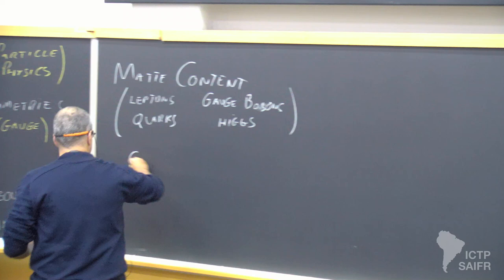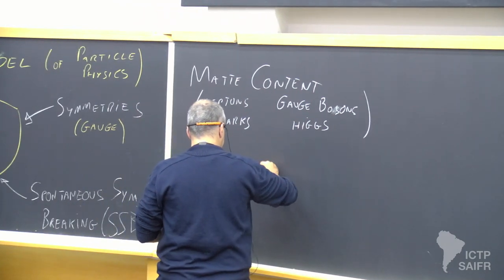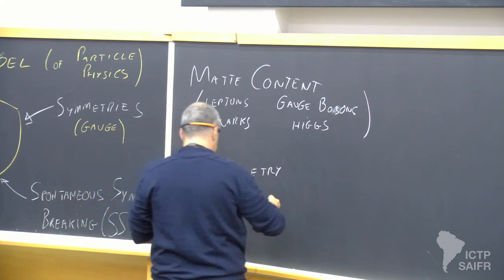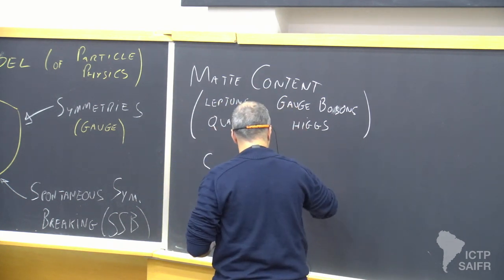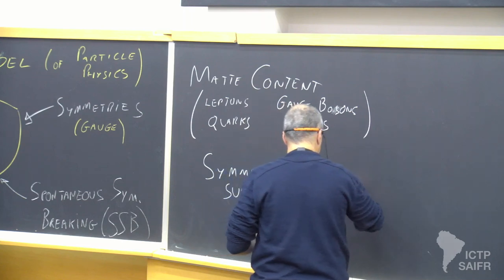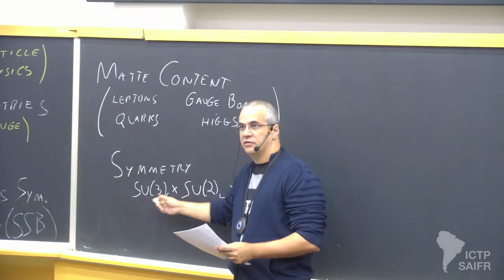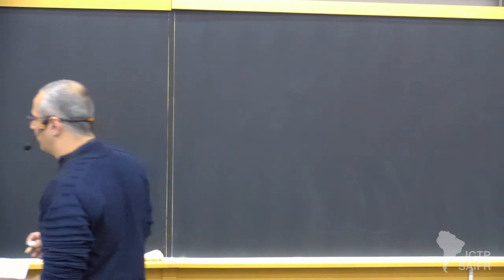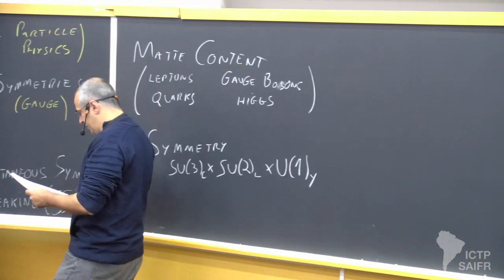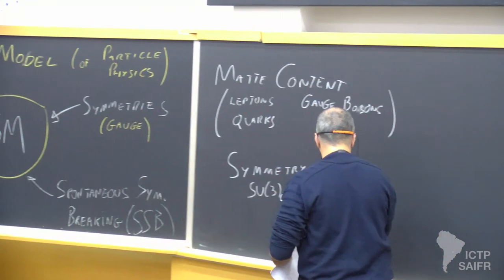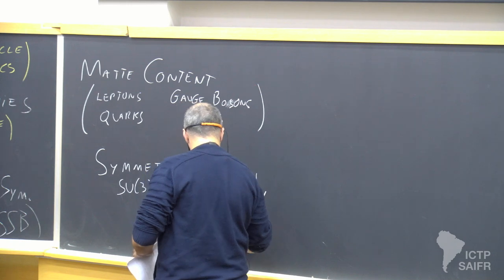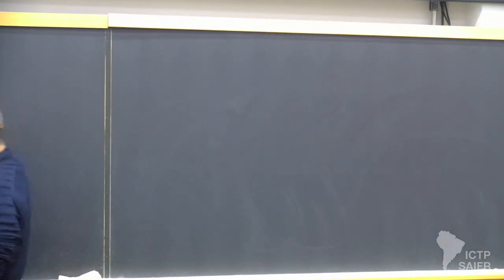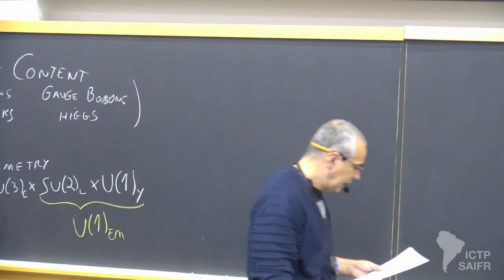And the symmetry — in the case of the standard model — is SU(3) color times SU(2) left times U(1) hypercharge. These are Lie groups, which is why knowing at least a little bit about Lie algebras will make your trip easier. And there's also a breaking implied here: this breaks down to U(1) electromagnetic, so Maxwell equations will come out of this part after the breaking.